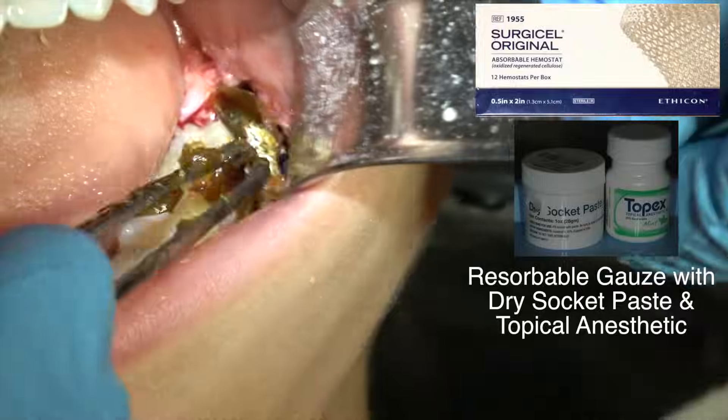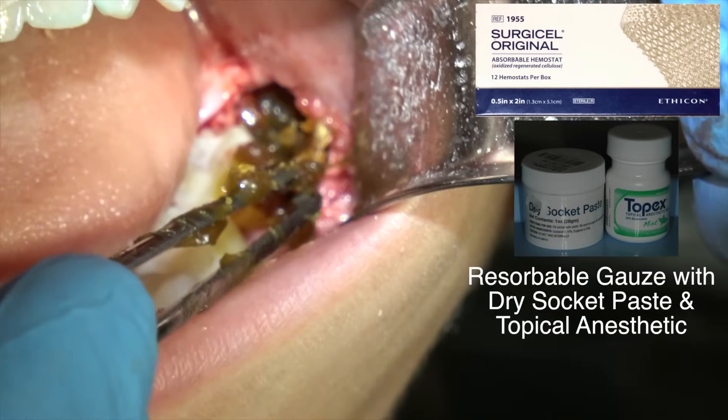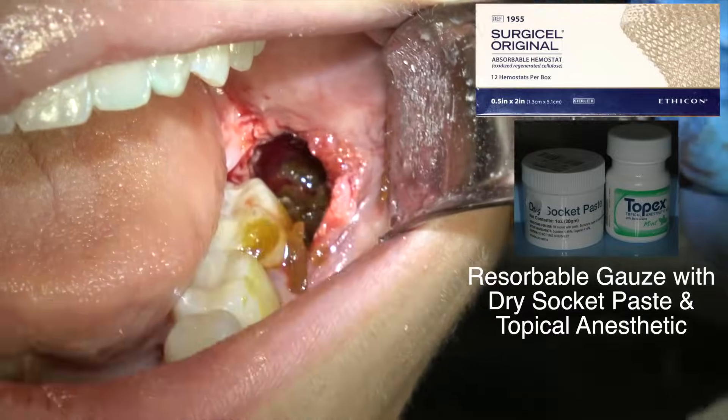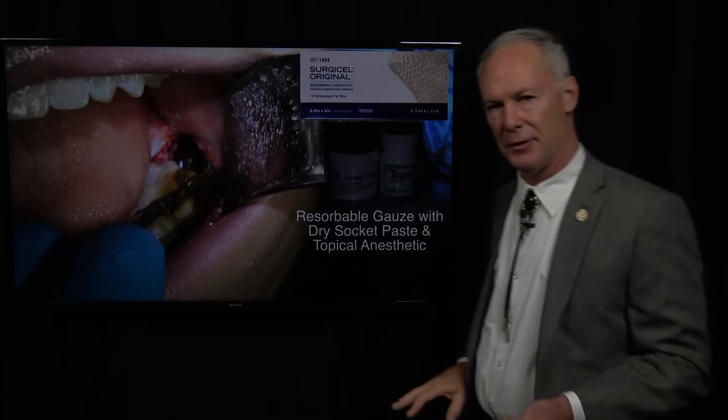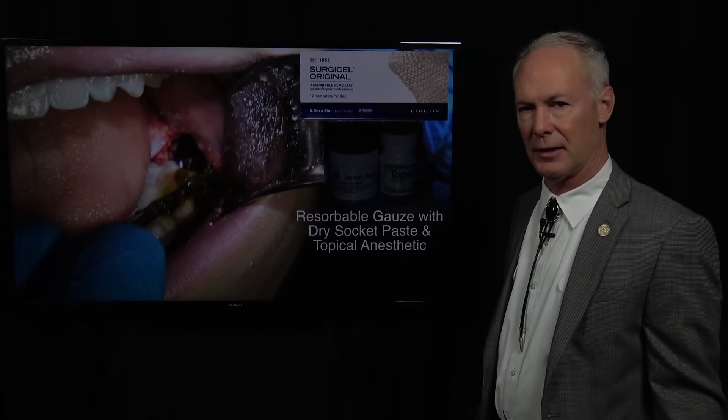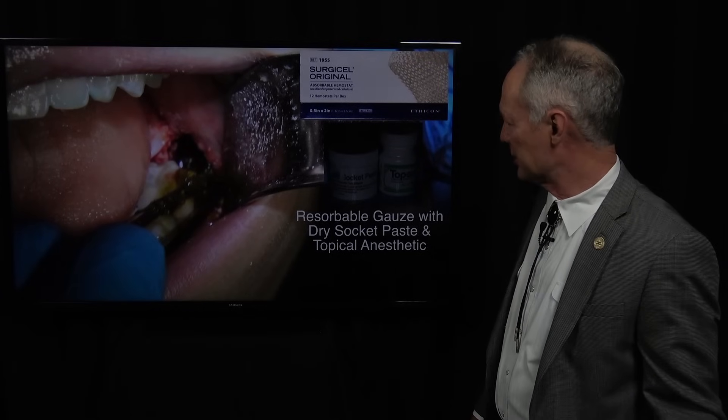I don't do it in the maxillary. I just do it in the mandibular. Maxillary wisdom teeth I never pack. Just place that in there and this is going to hold the blood clot in place so you don't get a dry socket. In 36 years of practice I've never gotten a dry socket because I do this any time I have to cut the bone with a mandibular molar extraction.